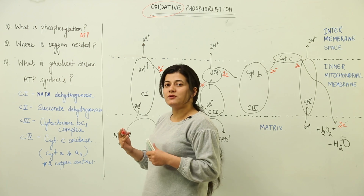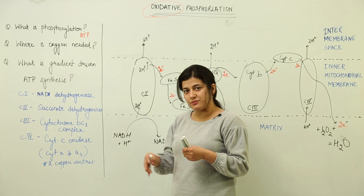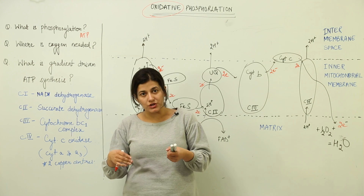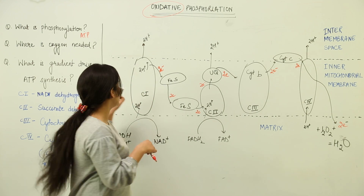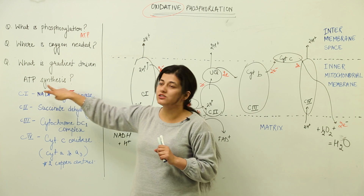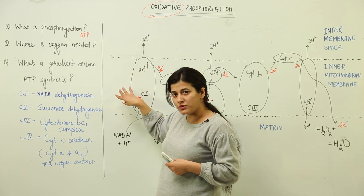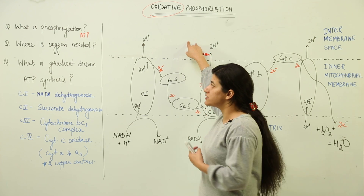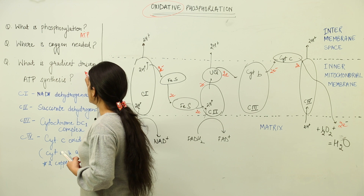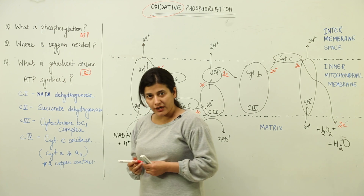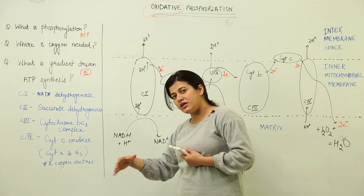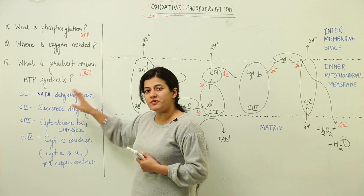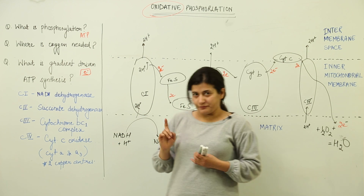We say aerobic respiration requires oxygen, but in the two earlier steps there was no mention of oxygen. So where is this oxygen required? Why do we say that a person dies in the absence of oxygen? This entire process is gradient-driven — it is an electron gradient. The electrons move along a redox gradient from one donor or acceptor to the other, which drives gradient-driven ATP synthesis.